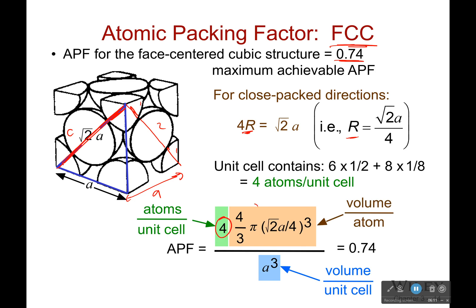So we do that. Four atoms, four thirds pi. That's r cubed over a cubed. This is the volume of the cube. We do all this out. Well, it comes out to be 0.74. And this is the maximum achievable atomic packing factor, the maximum achievable atomic packing factor. Nothing can be better than that.